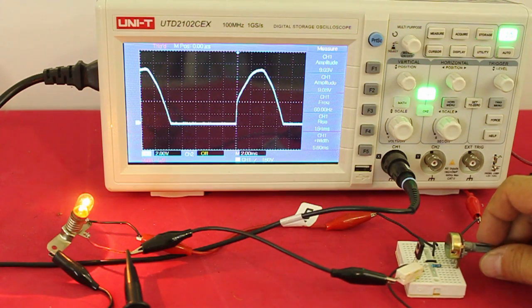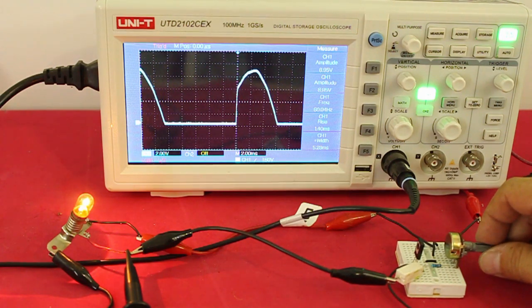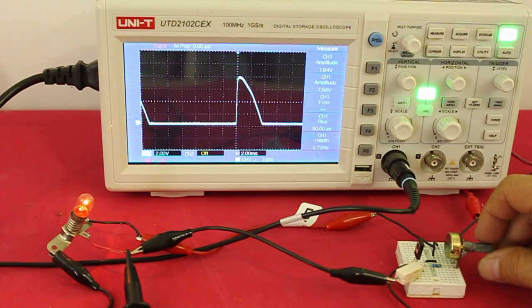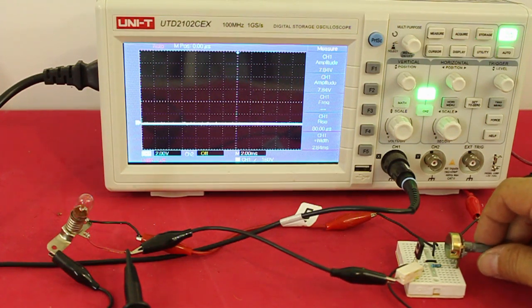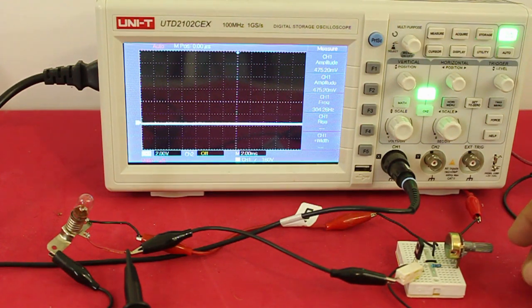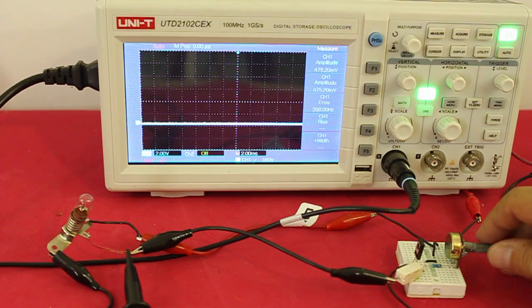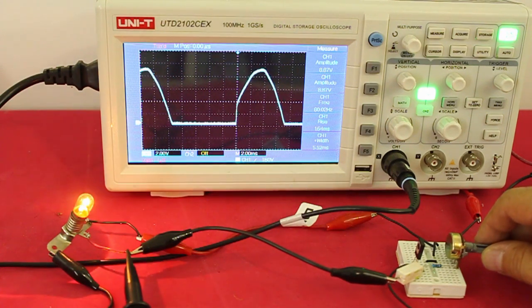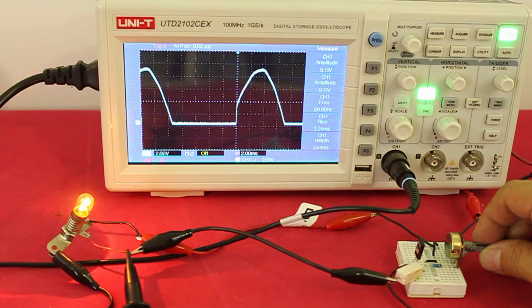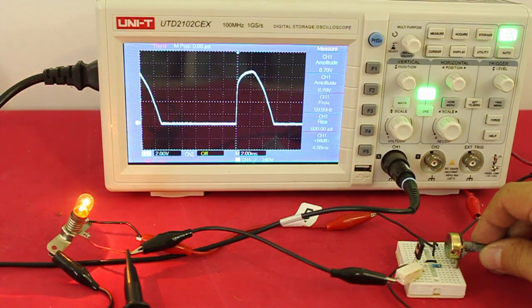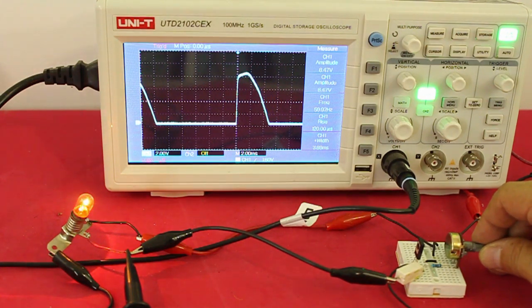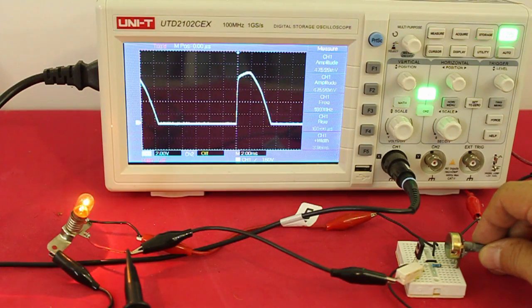And if we continue to increase, we can reach the point where we have only half of the semi-cycle. Beyond that point, the thyristor will not conduct electricity. And of course, this has an effect on the power. You can see how the intensity of the light is less.